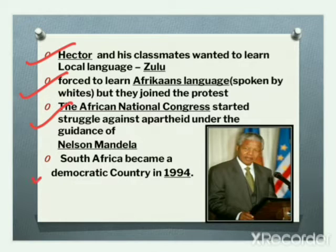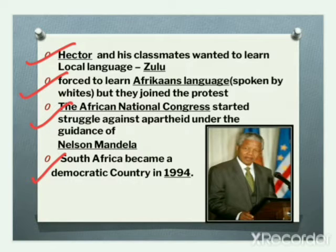At last, South Africa became a democratic country in 1994, in which people of all races were considered equal.